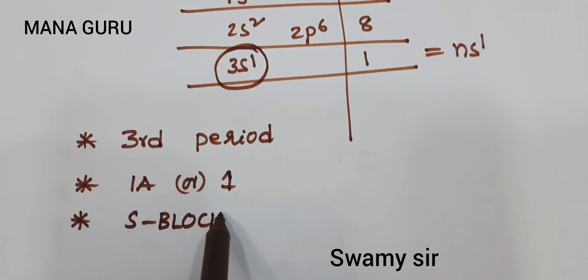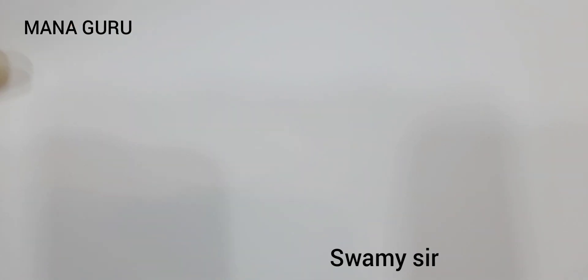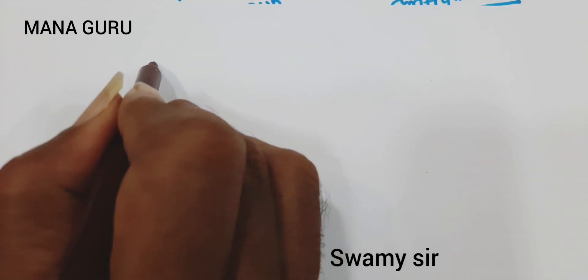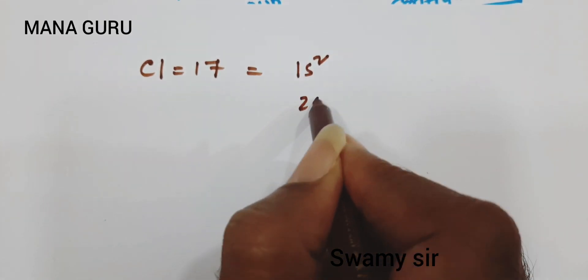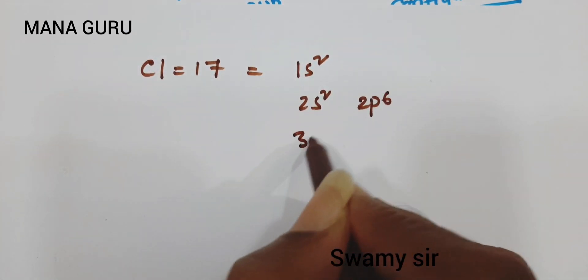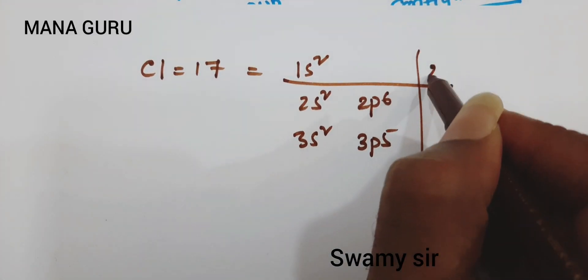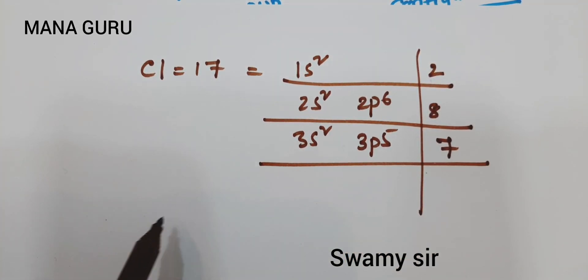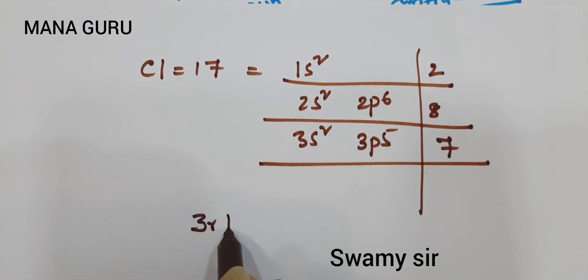I will go with another example. Taking atomic number 17 — chlorine. Write the configuration: 1s2, 2s2, 2p6, 3s2, 3p5. In the first shell, 2 electrons; second shell, 8 electrons; third shell, 7 electrons. Total number of shells are 3, so it belongs to the third period.